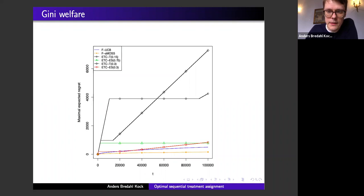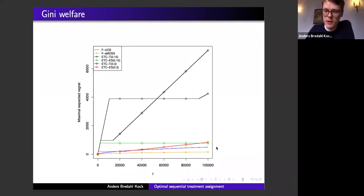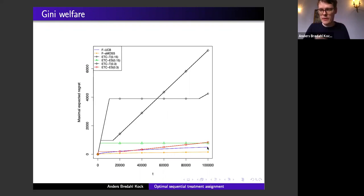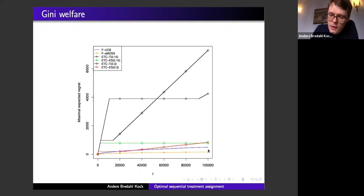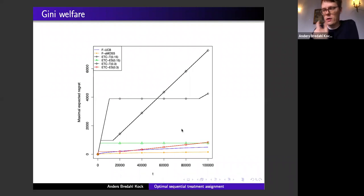What the graph somewhat hides is that the FARMOST policy is more than three times better than the FUCB policy: at the end of 100,000 assignments, FUCB's regret is around 500 while FARMOST's is around 160. This ratio is obscured because the two black lines distort the axis. In terms of worst-case performance, our current recommendation is unambiguously the FARMOST policy.